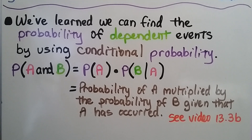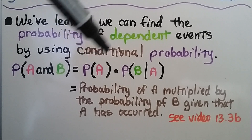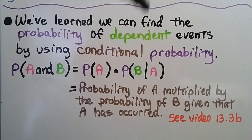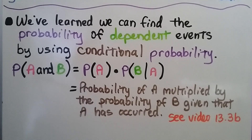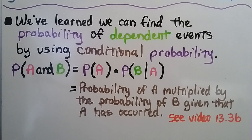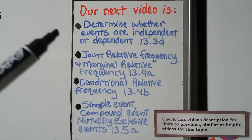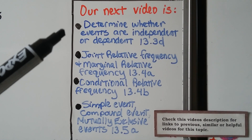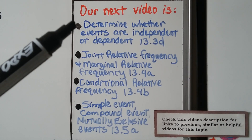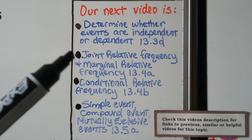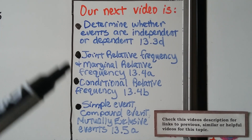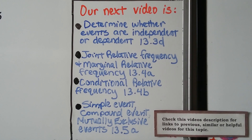So we've used the formula: the probability of A and B equals the probability of A multiplied by the probability of B given that A has occurred. Our next video is the last part of 13.3, where we'll determine whether events are independent or dependent. Then we'll go on to 13.4a, covering joint relative frequency, marginal relative frequency, and conditional relative frequency.